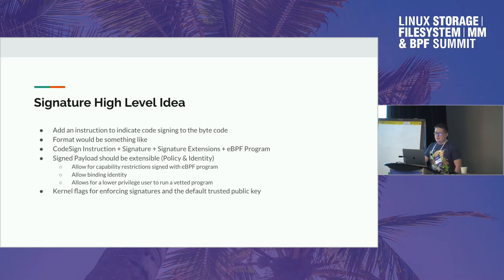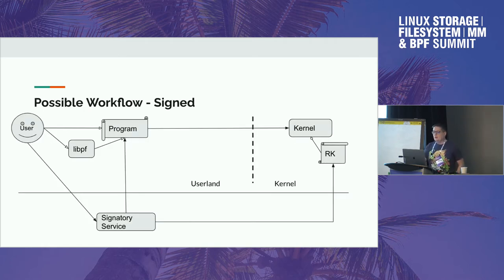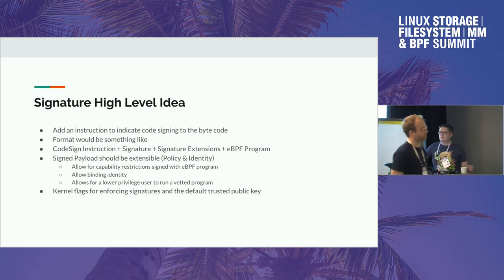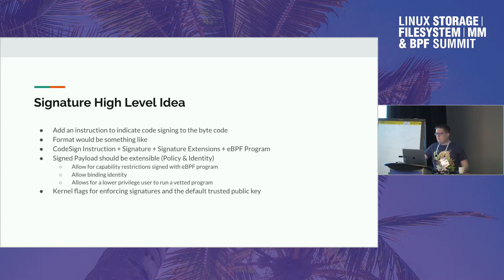We would add some kernel flags for enforcing signatures and a default trust public key. Could you explain what you think identity means here? Is it a user public-private key or something?